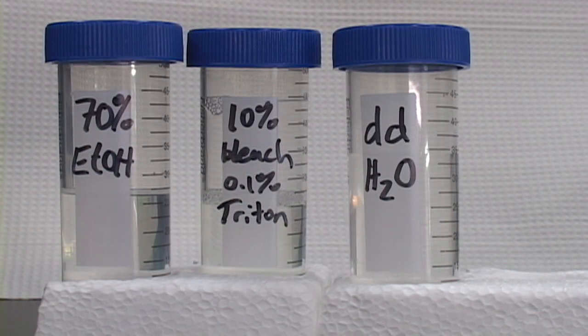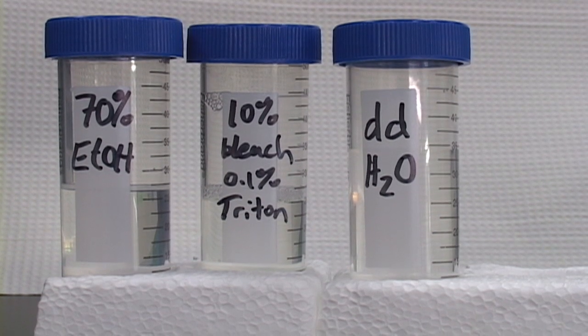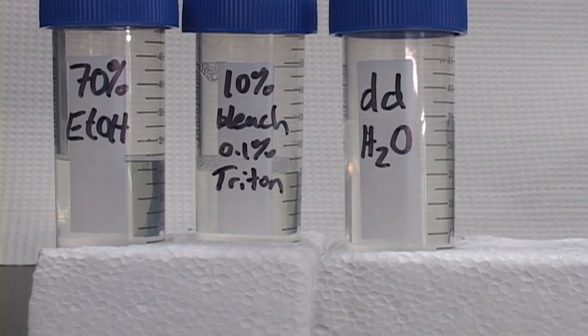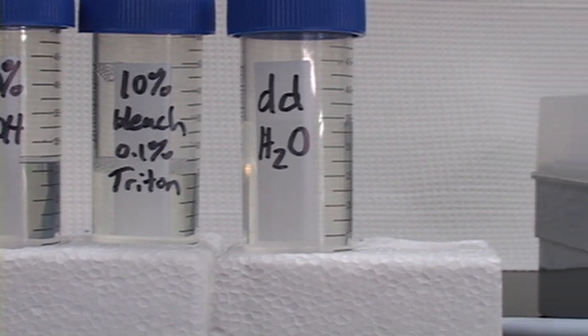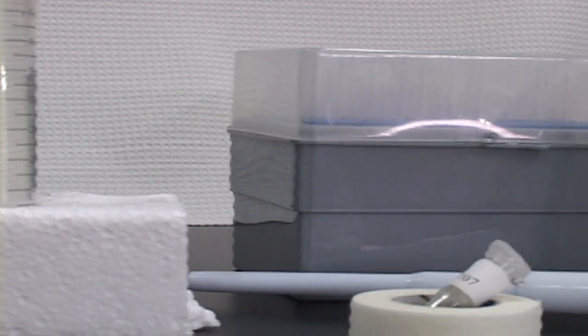The reagents you will use to sterilize the seeds are 70% ethanol and a solution of 10% bleach with 0.1% of the detergent Triton X100. Finally, the seeds will be rinsed four times with sterile water.